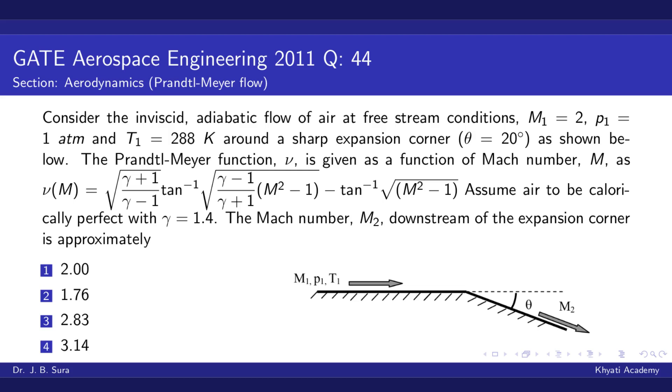Consider the inviscid adiabatic flow of air at free stream conditions: M₁ equals 2, p₁ equals 1 atmosphere, and T₁ equals 288 Kelvin around a sharp expansion corner of 20 degrees as shown below in the figure.